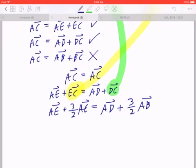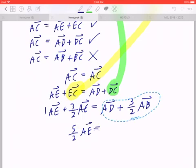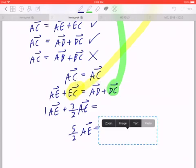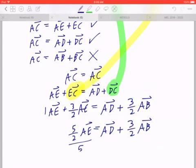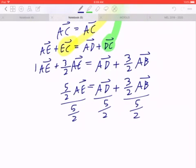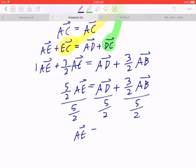So now, the hard part's over. 1 plus 3/2, it's 1 plus 1 and a half, or 2 and a half. 2 and a half is the same as 5/2 times AE. The right-hand side, we're going to copy. And in a moment, you have to remember that the opposite of multiplying by 5/2 is to divide by 5/2. And again, when you're dividing by a fraction, it's the same as multiplying by the reciprocal. So when you're dividing by 5/2, you're really multiplying by 2/5 times AD. Likewise, you're multiplying by 2/5 times 3/2 AB.